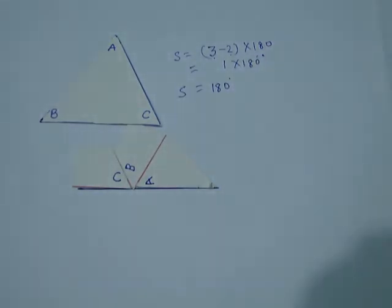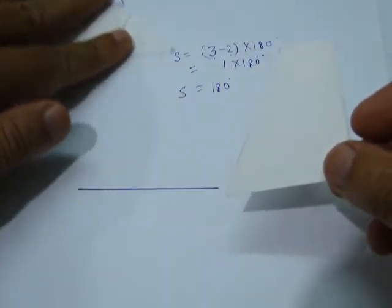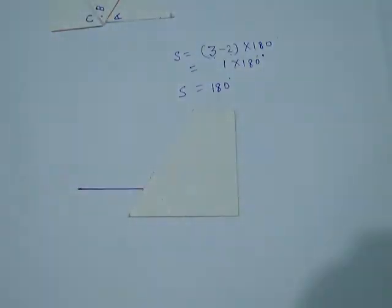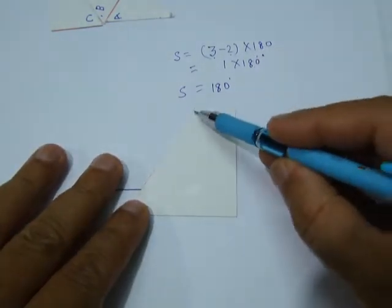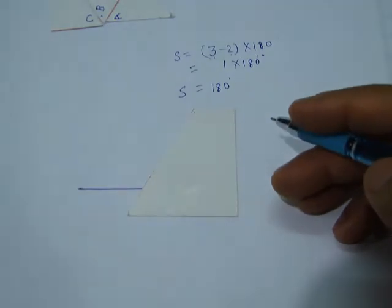Now we will take the next polygon after triangle, that is a quadrilateral. We remove the triangle. This is a quadrilateral. We will verify the angle sum property of a quadrilateral. A quadrilateral can be named in any way, such as A, B, C, D or P, Q, R, S, whatever you want.